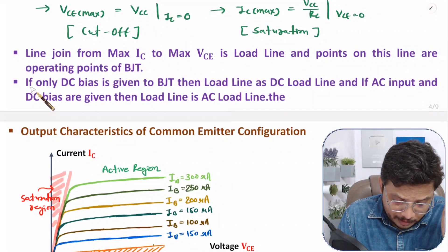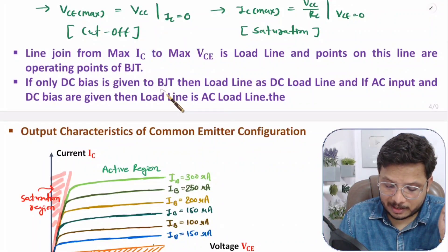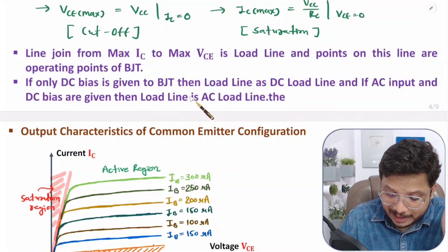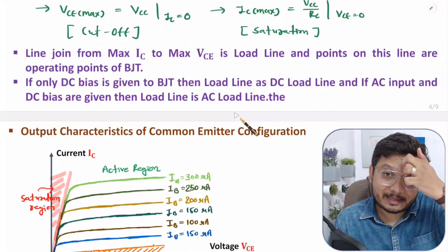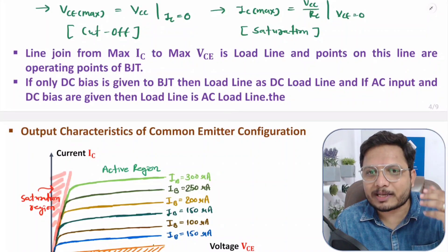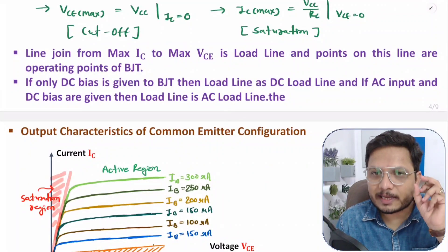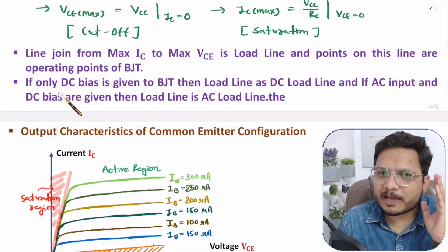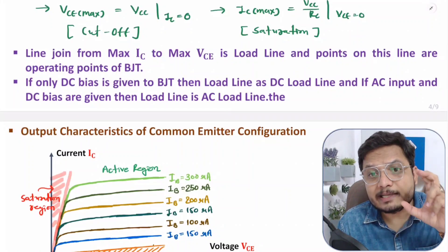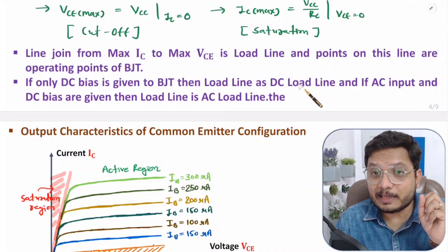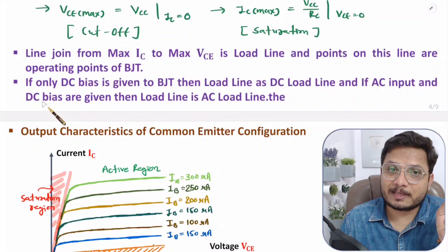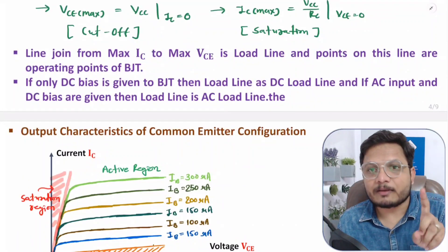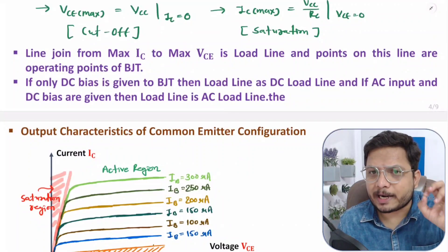If only DC bias is given to BJT, then the load line will be a DC load line. But if we give AC input along with DC bias, then the load line will be an AC load line. In DC load line, we have only DC bias — like VCC along with RC. In AC load line, we have AC input along with DC bias.